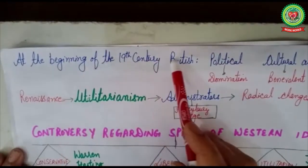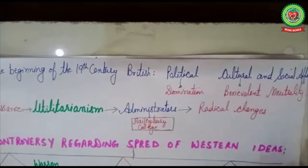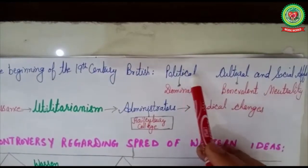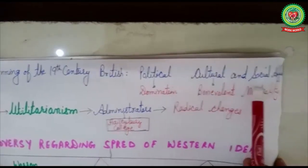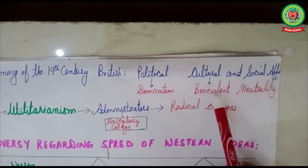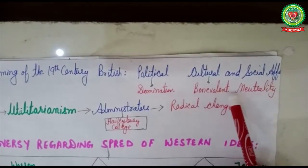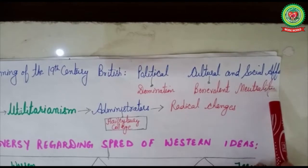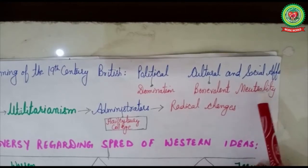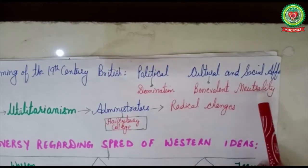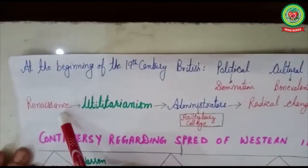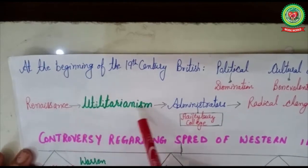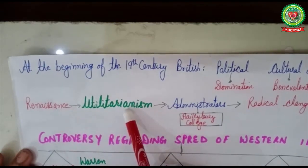At the beginning of the 19th century, the British followed two types of policies. In the political sphere it dominated India, but in cultural and social affairs it adopted a policy called benevolent neutrality — meaning not to interfere in the social and cultural life of Indians. As the Renaissance came in England, they developed a policy called utilitarianism.